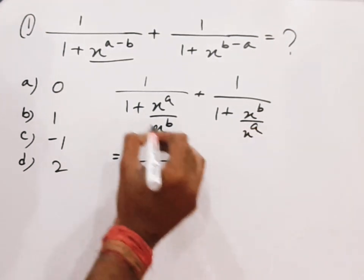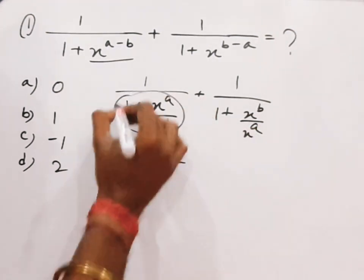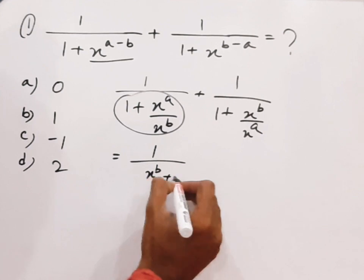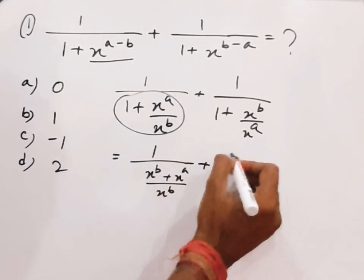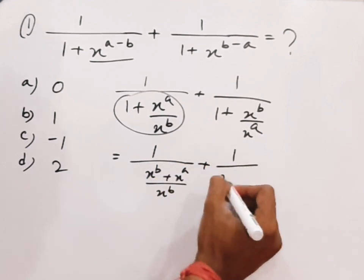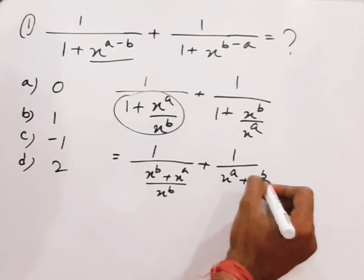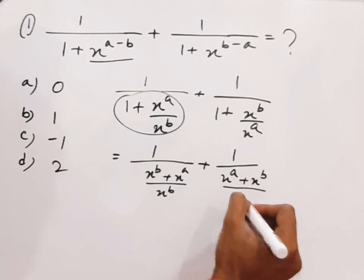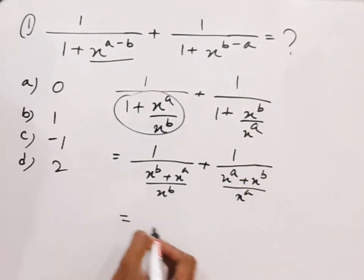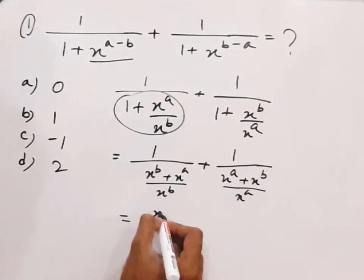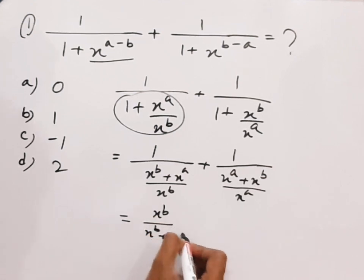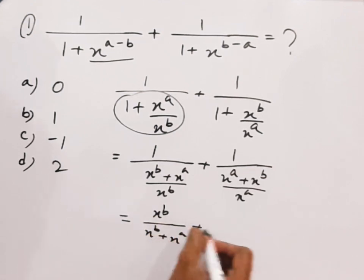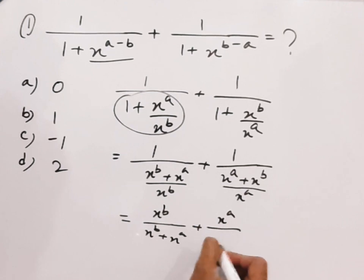So the common denominator of the first term will be x^b plus x^a by x^b, and 1 by x^a plus x^b by x^a. Therefore, taking the reciprocal gives us x^b by (x^b + x^a), plus x^a by (x^a + x^b).